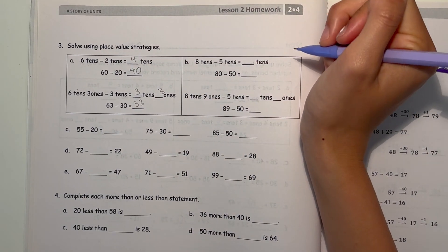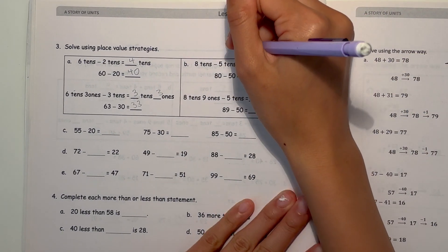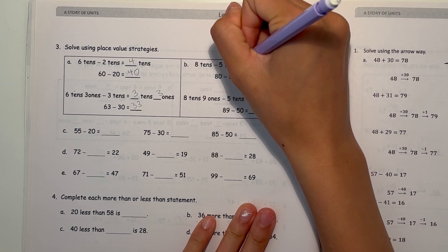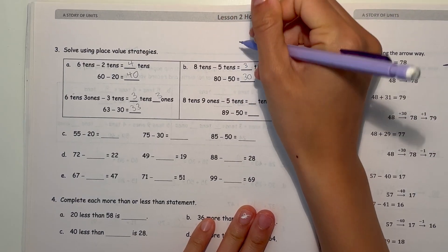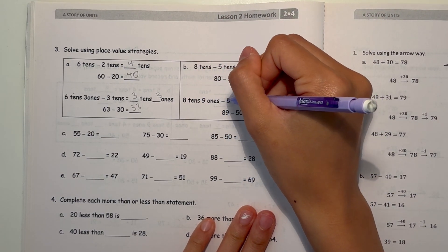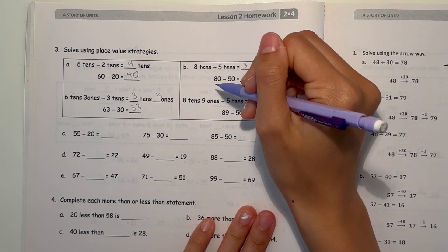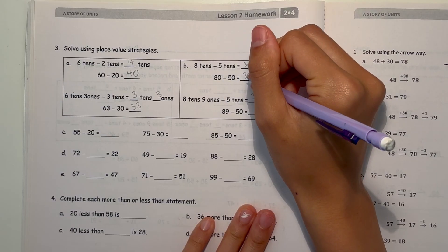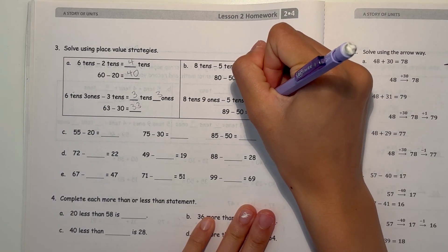Alright, and now B, 8 tens minus 5 tens, so 80 minus 50 is 30. And 8 tens, 9 ones, minus 5 tens. 8 tens minus 5 tens, so that's 3 tens, 9 ones. So 89 minus 50 is 39.